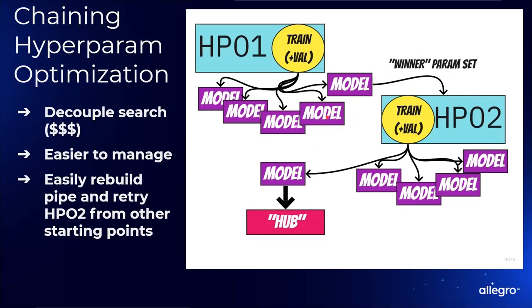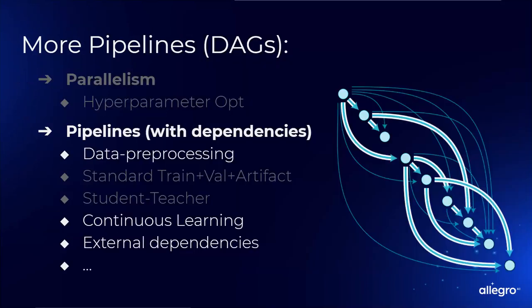You can also have two successive hyperparameter optimizations. If you have parameters that are decoupled — like learning rate and type of optimizer — you don't want to search both together because it wastes money. Instead, do a tight search over simpler parameters to get a good model, then use that model and those parameter sets as a starting point for a second hyperparameter optimization over other parameters. You get a winner model and it's easier to manage. If you want to switch entry into the second HPO, using pipelines it's just saying 'use that instead of this' — no code changes, manageable from the experimentation platform.